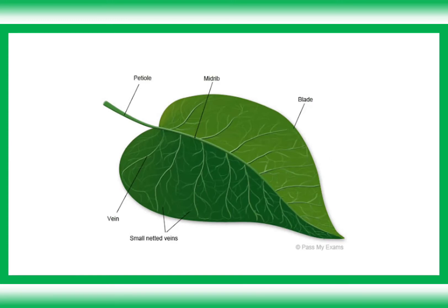The lamina or leaf blade is adapted to help photosynthesis: it is very thin so that light can be absorbed easily at depth, it has a large surface area, and it is flat so that maximum sunlight can be absorbed. The veins branch throughout so that products of photosynthesis can evenly reach every part of the leaf and be uniformly spread.